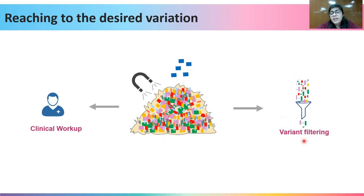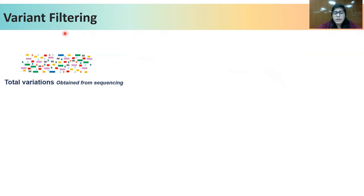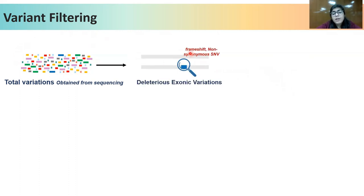The second component is variant filtering. In this component, we can filter variants from a million down to a handful by applying certain criteria. In the process of variant filtering, we take the total variants from sequencing and apply criteria to first look at frameshift and non-synonymous variations, because there are high chances that these kinds of variations can be deleterious and result in a disease phenotype.